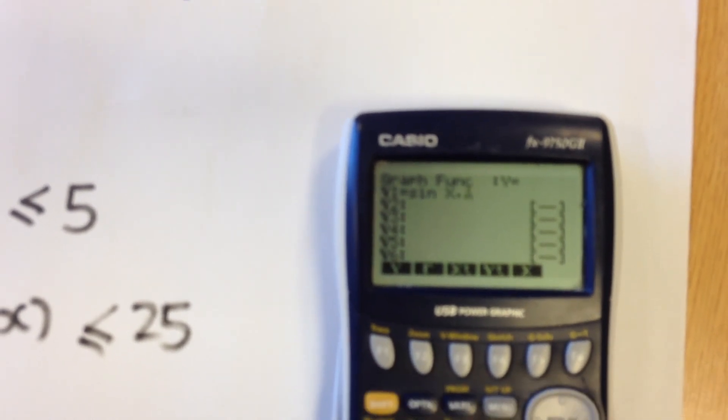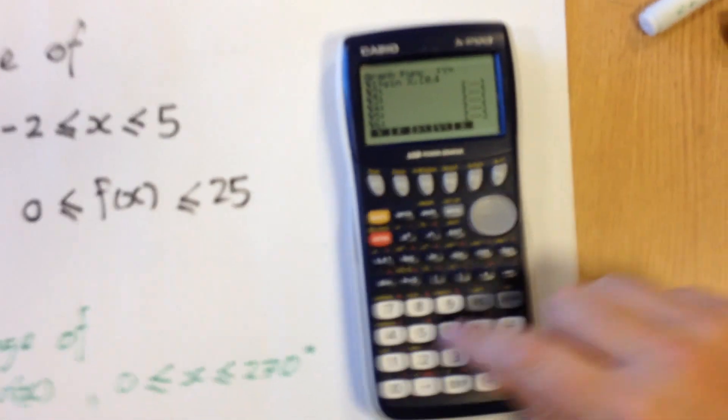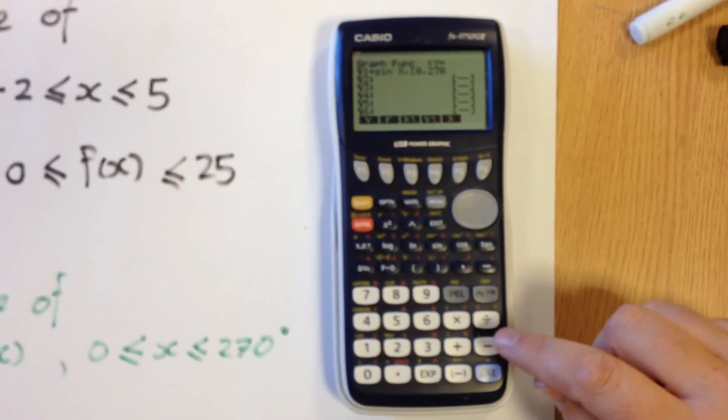Then comma, open the square bracket, from 0, comma to 270, and close bracket.